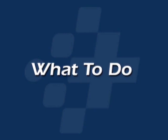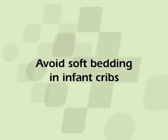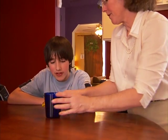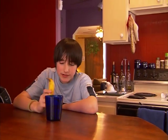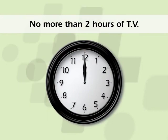What to do: Always put babies to sleep on their backs to help keep their airways open. Do not place infants on their sides in bed. Avoid soft bedding and other soft products in infant cribs. Teach your children healthy habits, offer nutritious foods, and encourage regular activity. Limit television and computer time. The American Academy of Pediatrics recommends no more than two hours of television, computers, and video games per day.